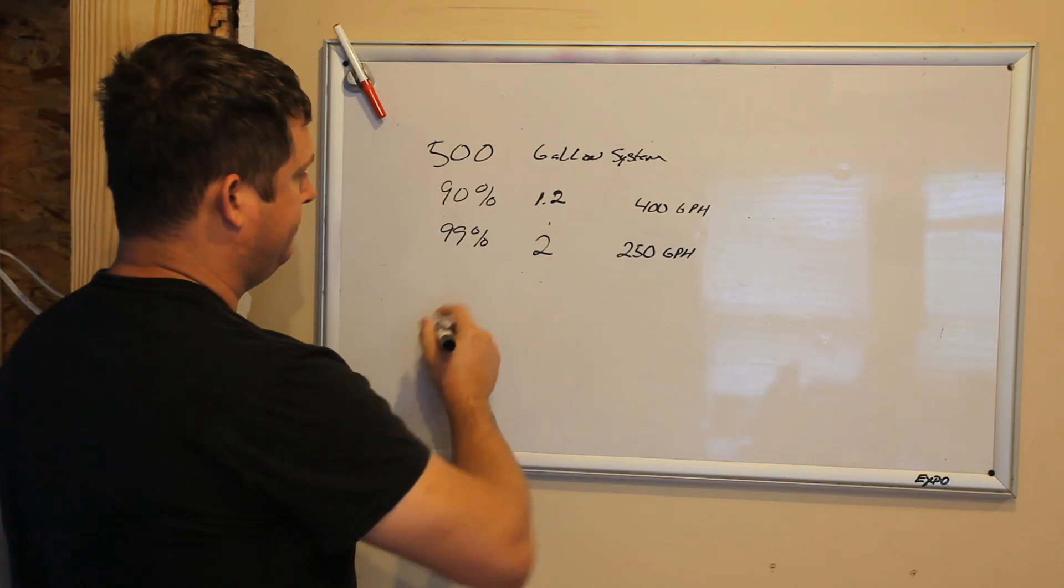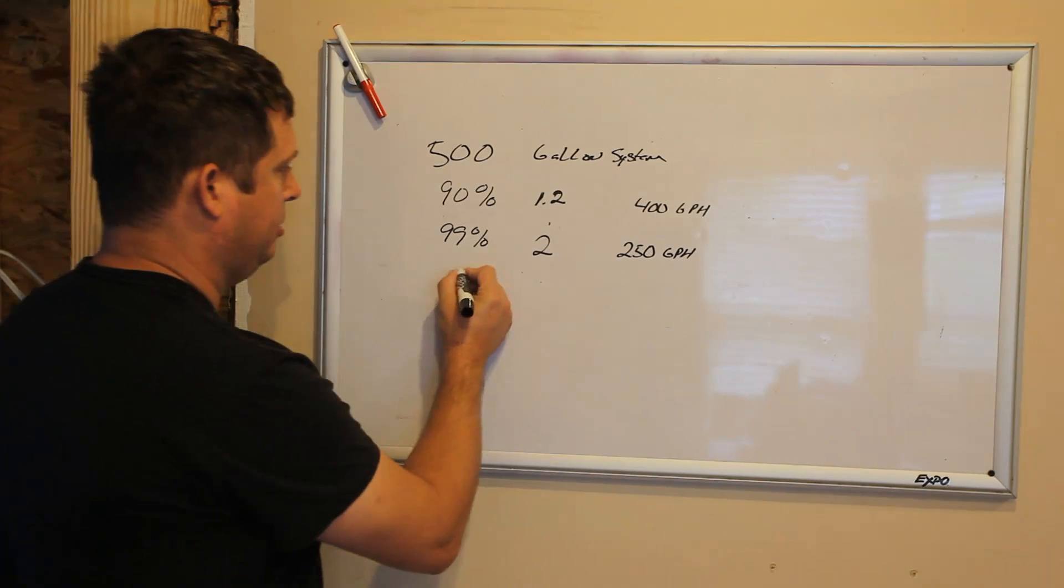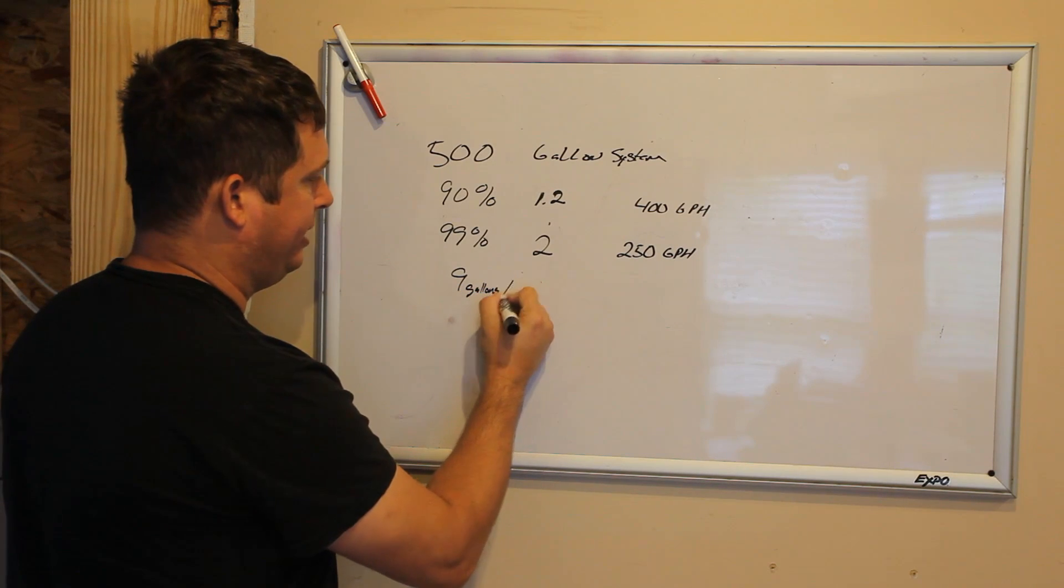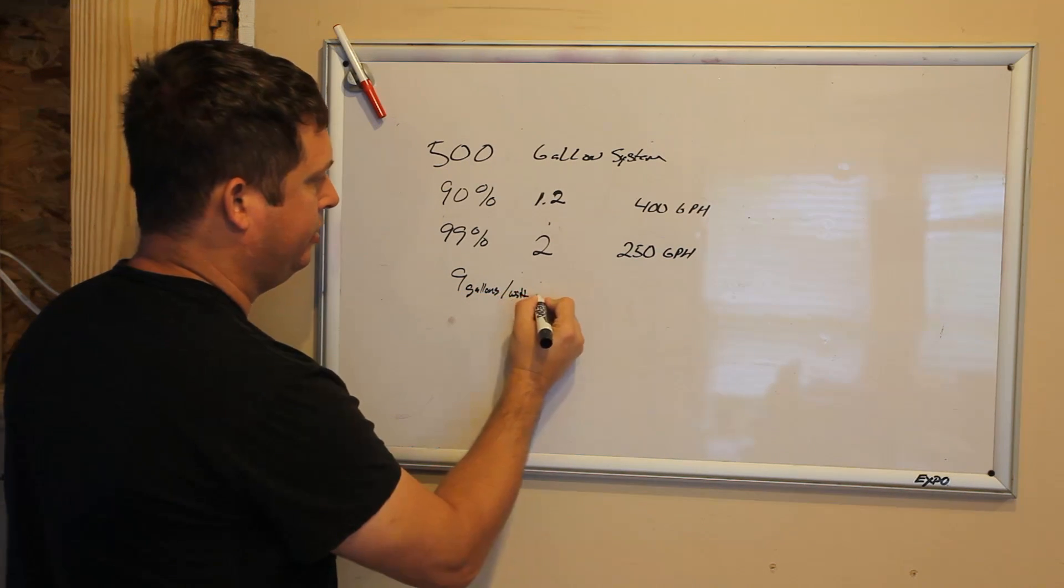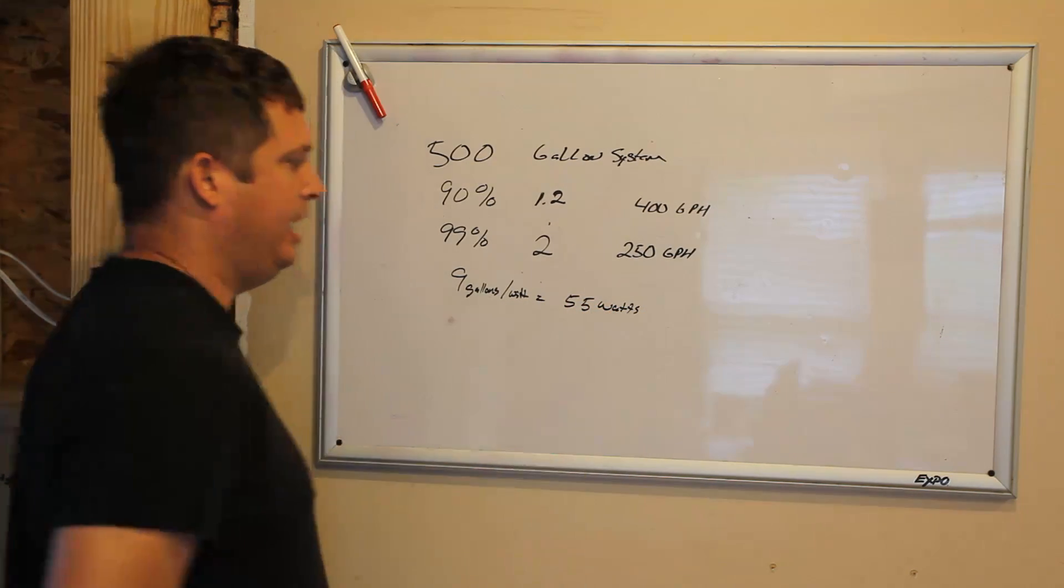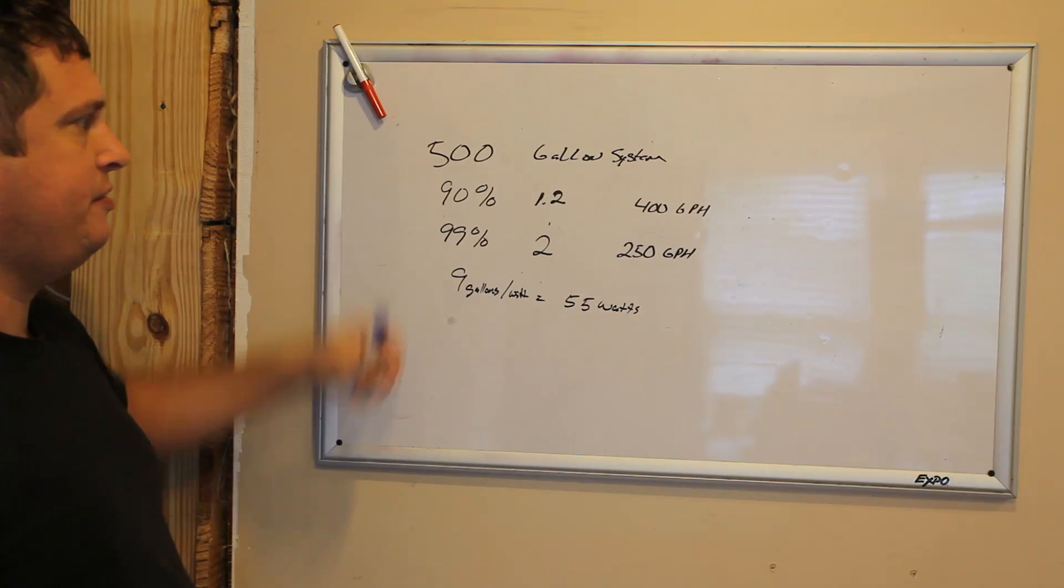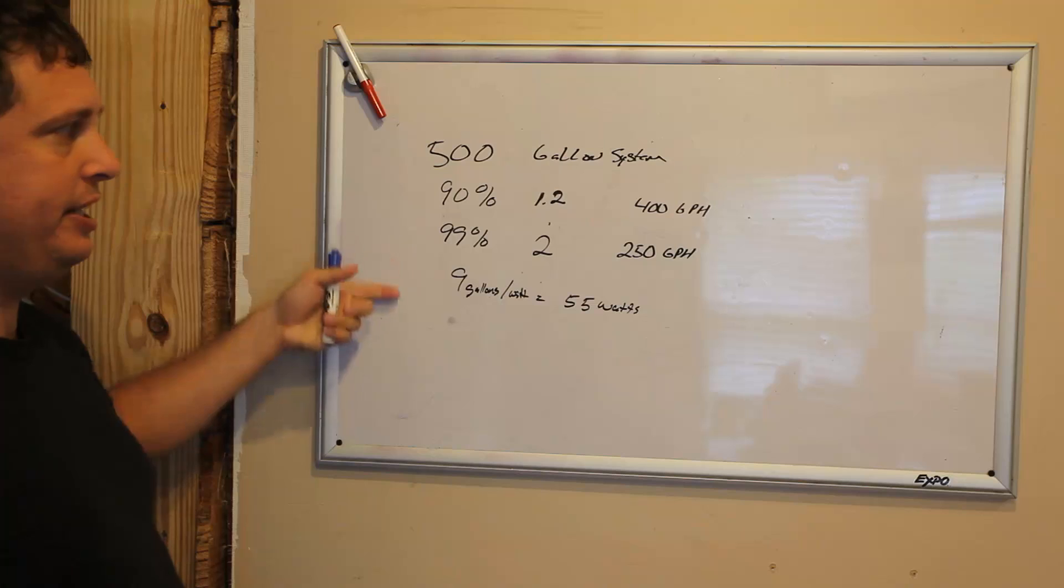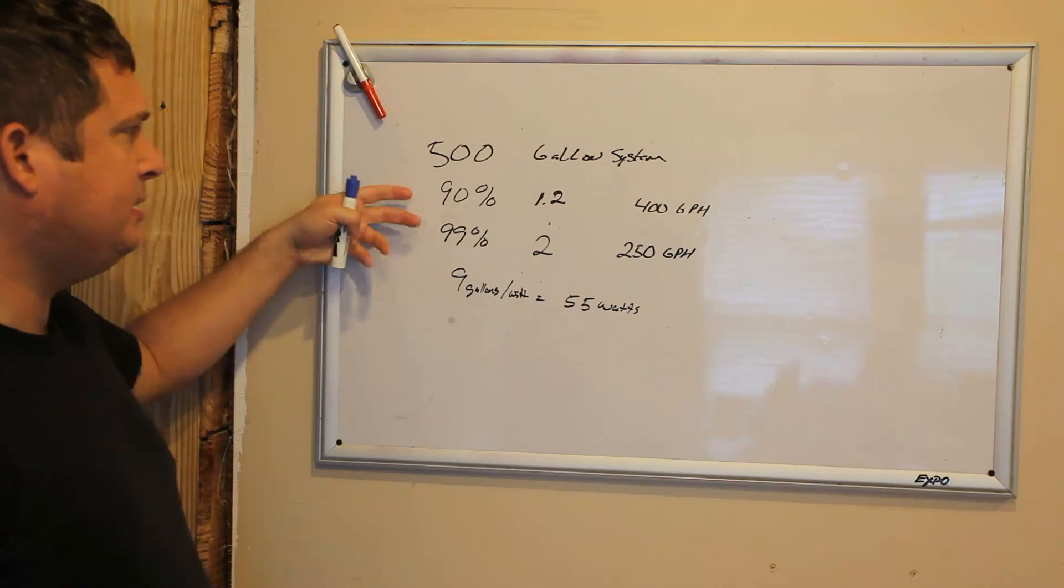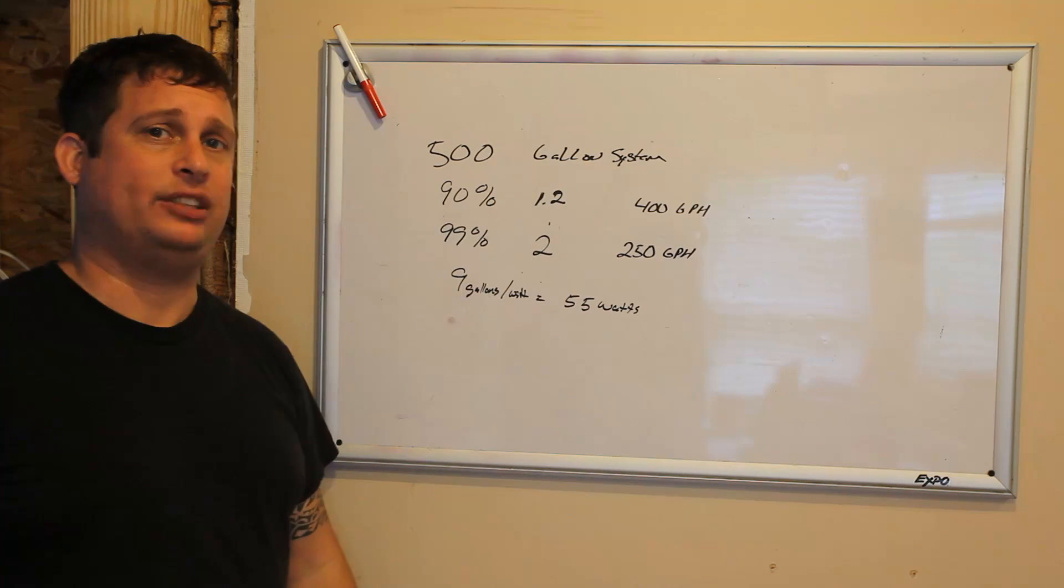For my tank, if you divide this by 9 gallons for each watt, you will come out with 55 watts, and this is what's required to give the appropriate dosage. This is based on turning the water over twice or filtering all the water in the tank twice per day.